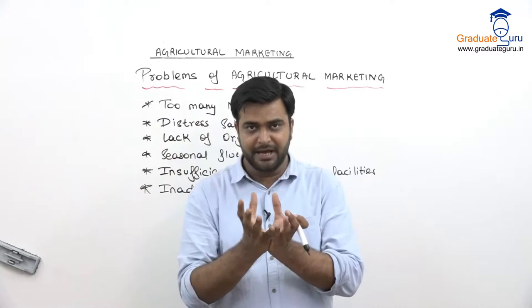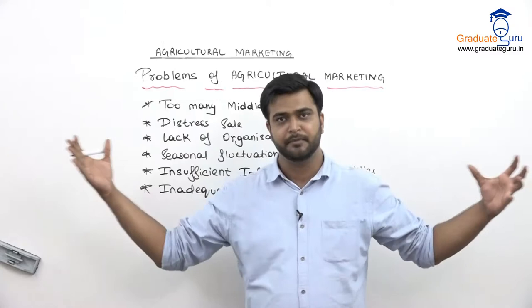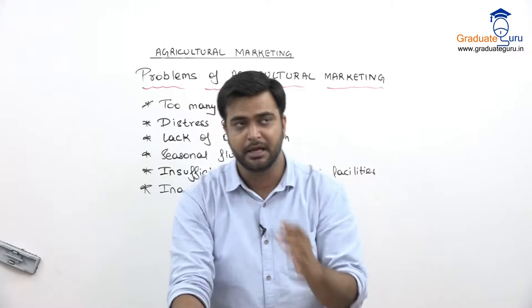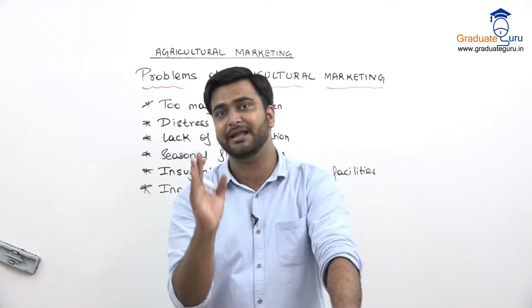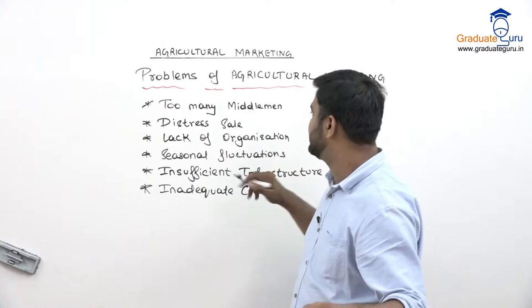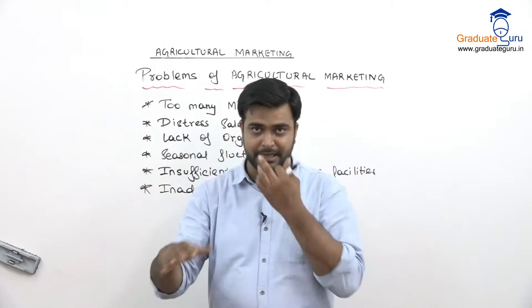Third: lack of organization. The traders and middlemen are very organized — they are in one place. But farmers in India are scattered — in every state, every area, deep in villages. These farmers don't know each other, so there is no unity among them. Secondly, they don't know what price they should get or what demand exists in the market, and thereby traders exploit them.